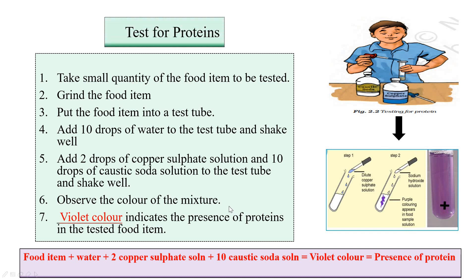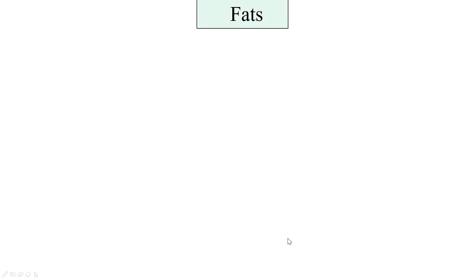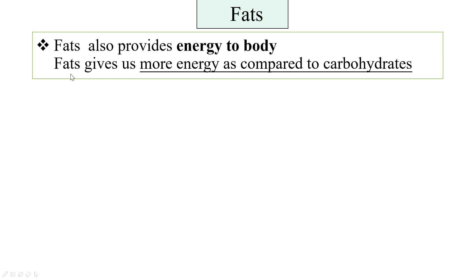To test for the presence of proteins: take a small quantity of the food item, grind it, and put it into a test tube. Add 10 drops of water and shake well. Then add 2 drops of copper sulfate solution and 10 drops of caustic soda solution, and shake well again. Observe the color — violet color indicates the presence of proteins in the food item.